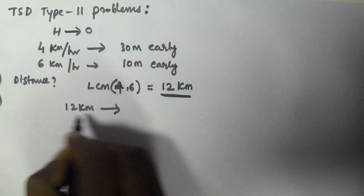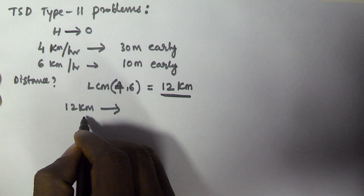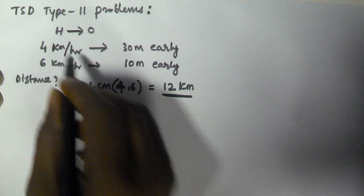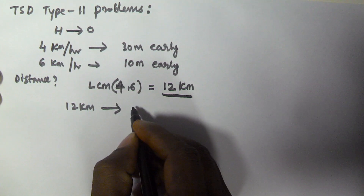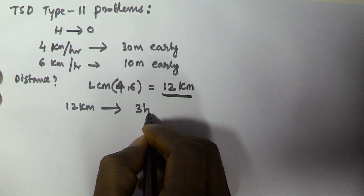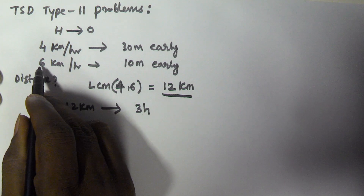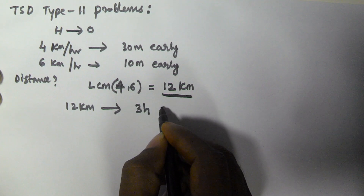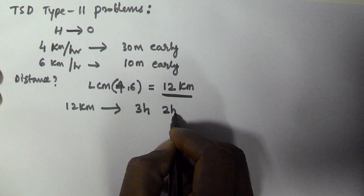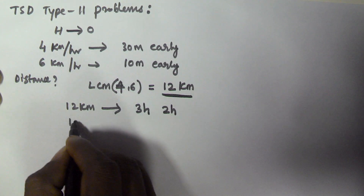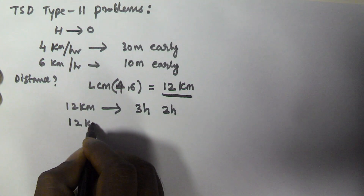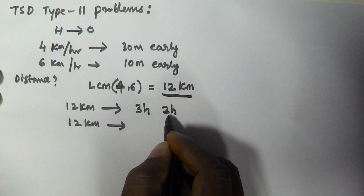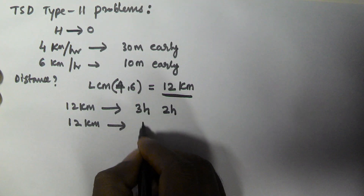If the distance between his home and office is 12 km, on the first day he travels at 4 km/h, which means he will take 3 hours. On the second day he travels at 6 km/h, which means he takes 2 hours. So what is the difference between 3 hours and 2 hours? That is 1 hour.